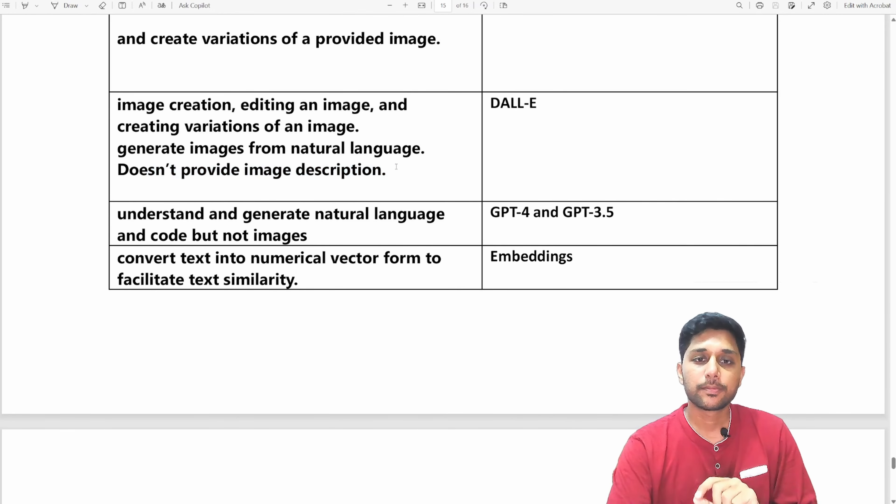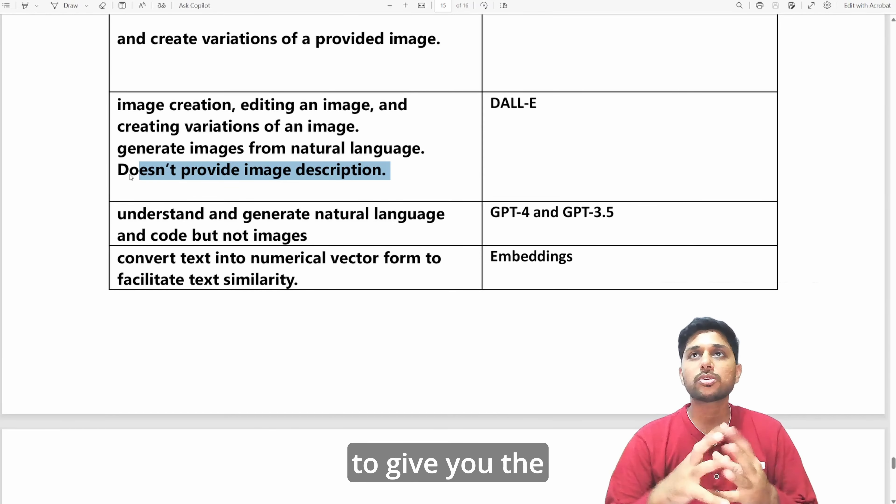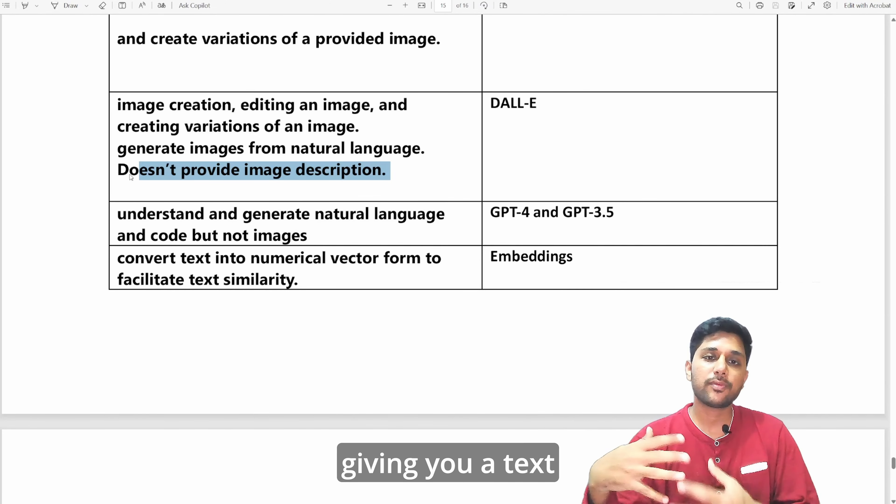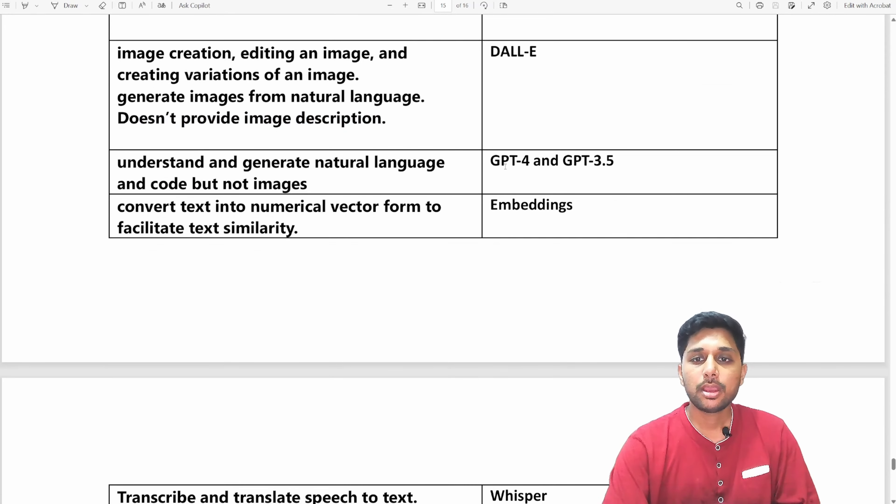But what it does not do is it does not provide you the image description. If you ask what is this in the image, it may not be able to give you the overall context of what is this image, because it is majorly an image generation AI, image related AI, not like giving you a text input kind of thing.